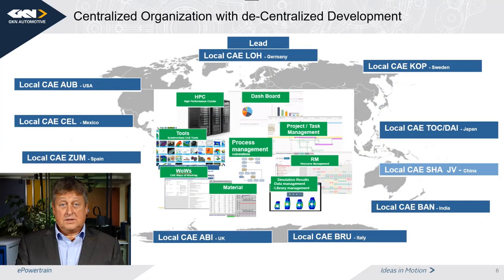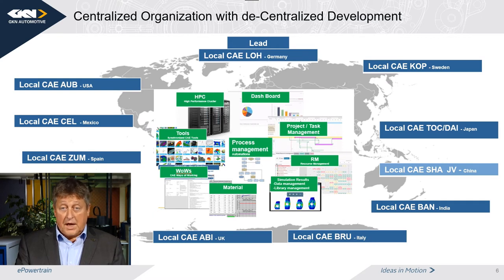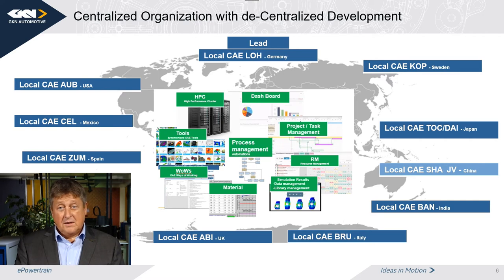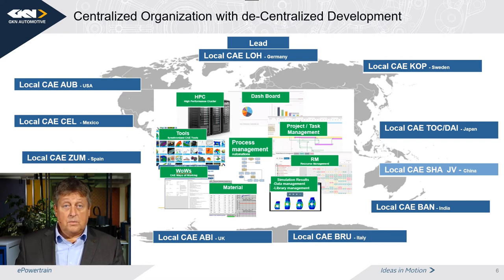This slide shows our global organization, with a central CAE department in Loma where all process management happens and where work packages from requesters are distributed to teams around the globe. We have teams in the Americas, Asia, and Europe. We do not distinguish by simulation complexity, but differentiate according to communication needs with requesters — if there is a high-frequency communication need, the group should be close to the requester; otherwise it can be located according to workload, which makes load balancing very easy.